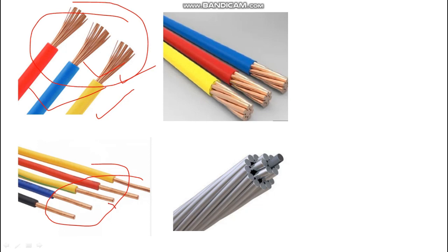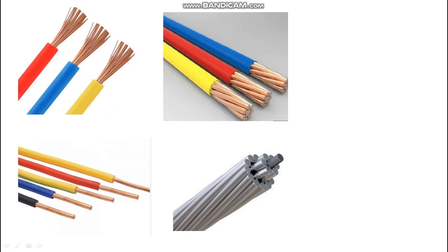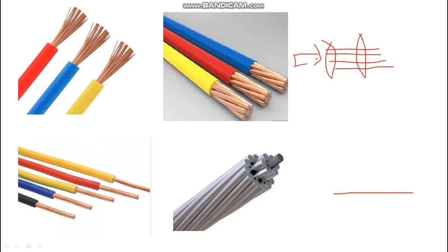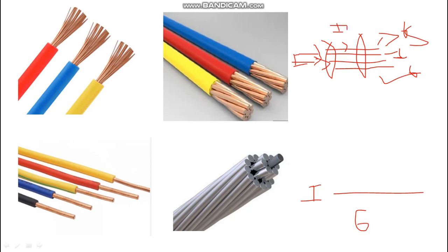Let's take an example. Suppose we have a multi-strand cable with many strands, and a single-strand solid wire. Say the solid wire resistance is 6 ohms, and each individual strand resistance is also 6 ohms. When current enters the multi-strand cable, it divides into separate strands — i1, i2, i3, and so on.